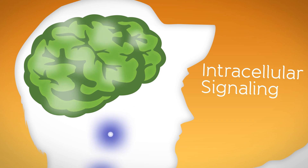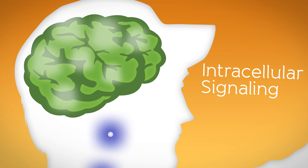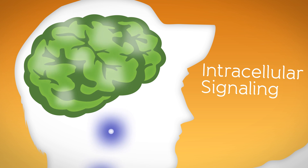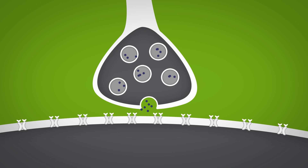the brain sends a series of messages that lead to activation of neurons in the peripheral nervous system. This leads to release of a neurotransmitter called norepinephrine. But how does this chemical signal get translated to a cellular response that will allow you to escape?